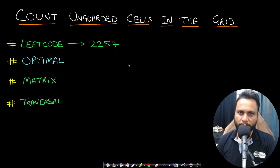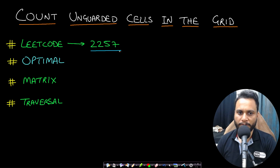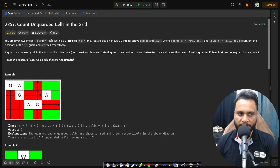Hello guys, welcome back to Take Dose. In this video we will look at the Count Unguarded Cells in the Grid problem, which is LeetCode number 2257. Let's now look at the problem statement.